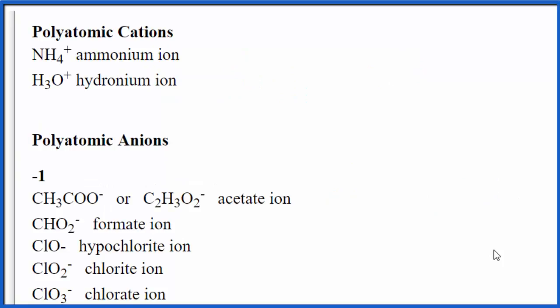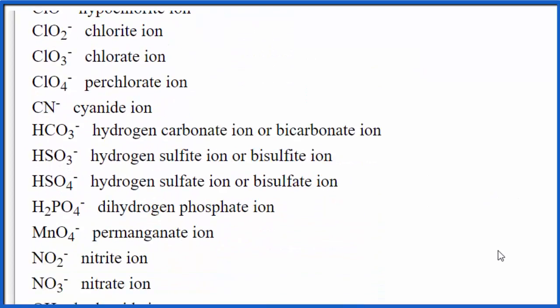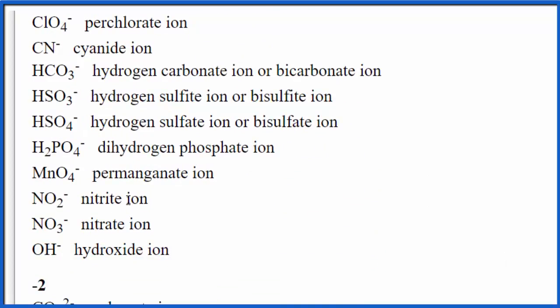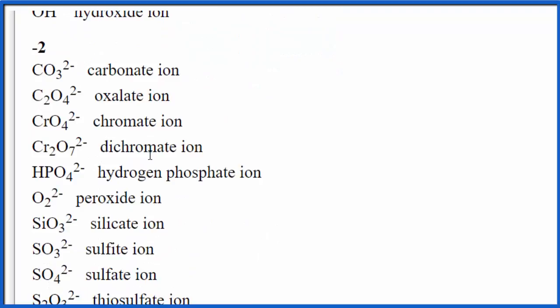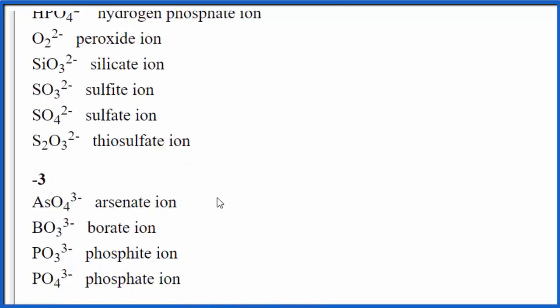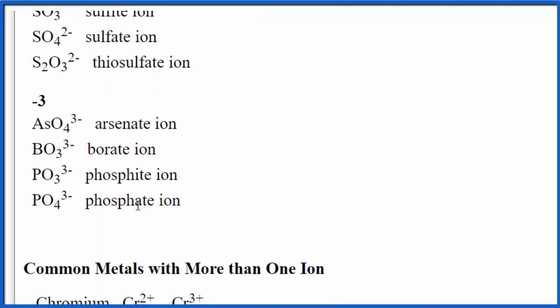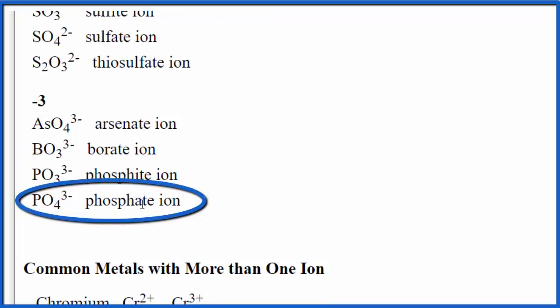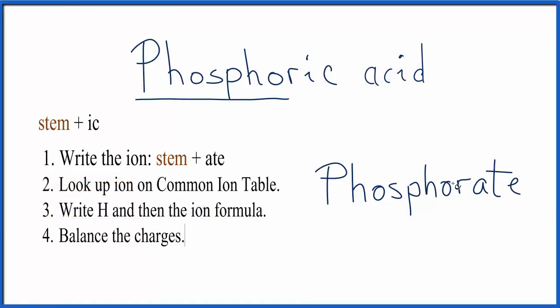Scrolling down the common ion table, I see some negative 1s. I don't see anything really here with P. Negative 2, peroxide, that's not it. Negative 3, here's the phosphate ion. So let's take this PO4 3- go back to our rules, and we can fix this.